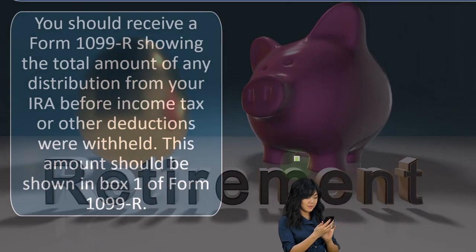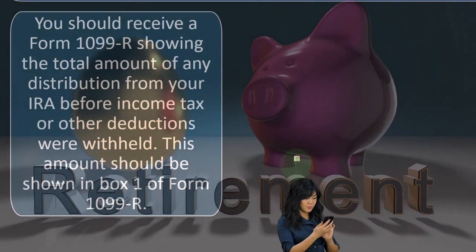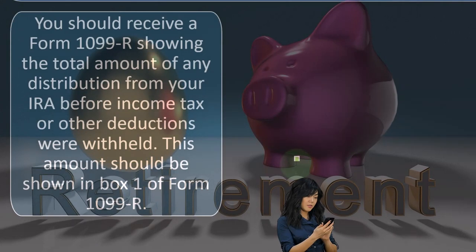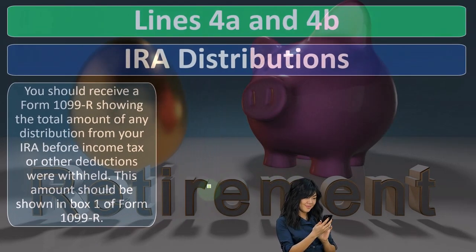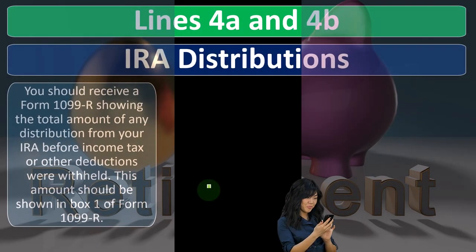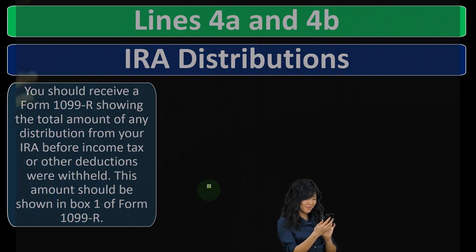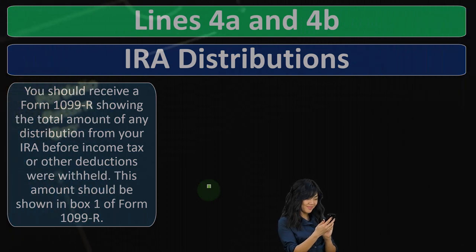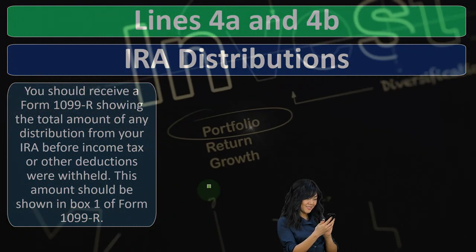Different kinds of retirement plans can be through work, which would be the 401(k)s, the 403(b)s, and so on. And then if we don't have a retirement plan through work, or if we're able to invest in something not tied to our employment — which is what we're generally focused on here — we've got IRA distributions.